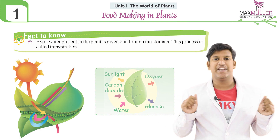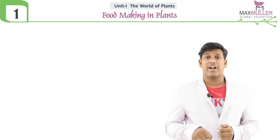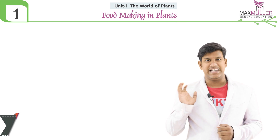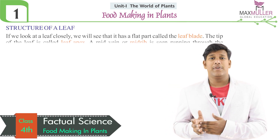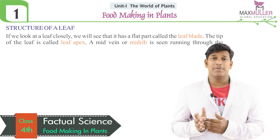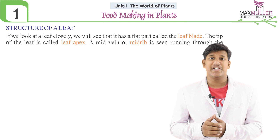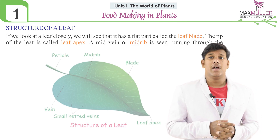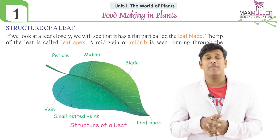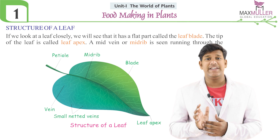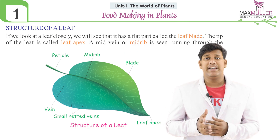The extra water present inside the leaf comes out through a structure known as stomata, and this process is known as transpiration. Now let us see the structure of the leaf. If you observe the leaf carefully, you will observe different parts present in it.